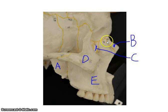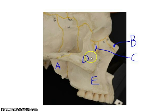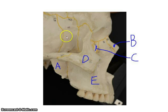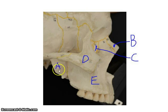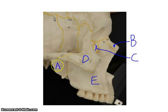Now we're looking at a lateral view. This gives you another picture of the nasal bone, and you can also see on the inside of the orbit of the eye the lacrimal bone. Again you have the zygomatic bone — your cheekbone — and the maxillary bone with the alveoli. You can also see the pterygoid process of the sphenoid bone in this view.